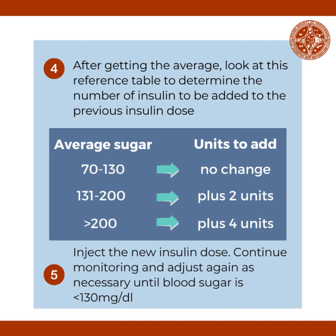If the average blood sugar is 70 to 130 milligrams per deciliter, there is no need to change your insulin dose. If the average blood sugar is 131 to 200 milligrams per deciliter, add two units to your current insulin dose. If it is more than 200 milligrams per deciliter, add four units to your current insulin dose.